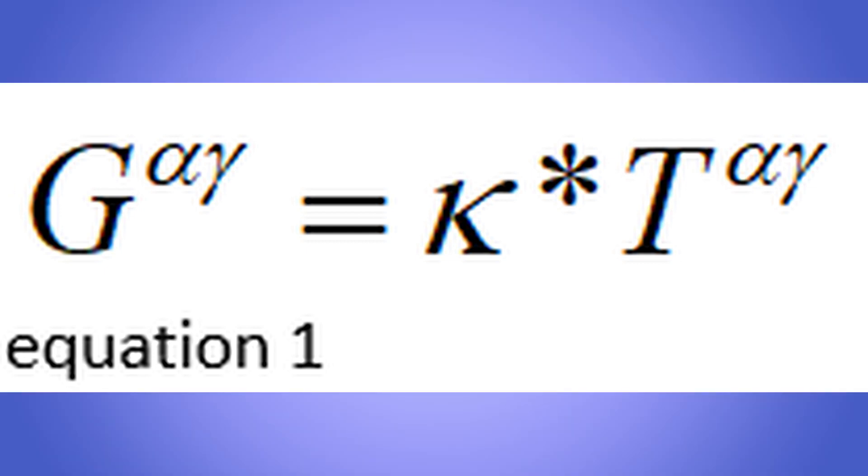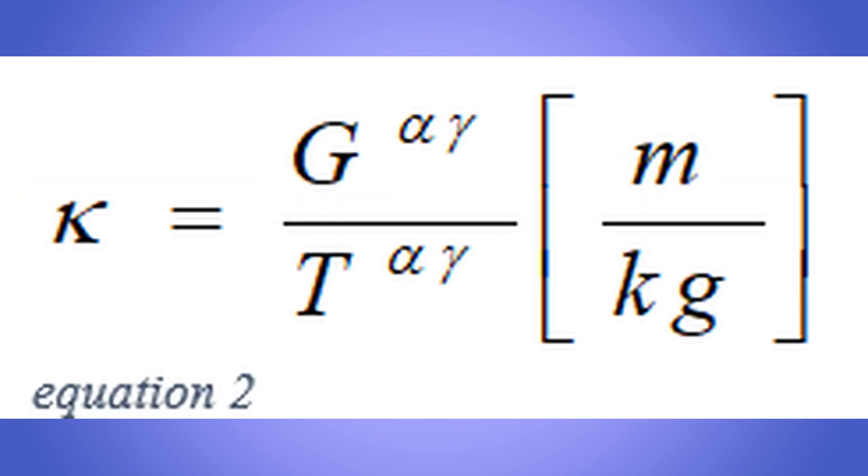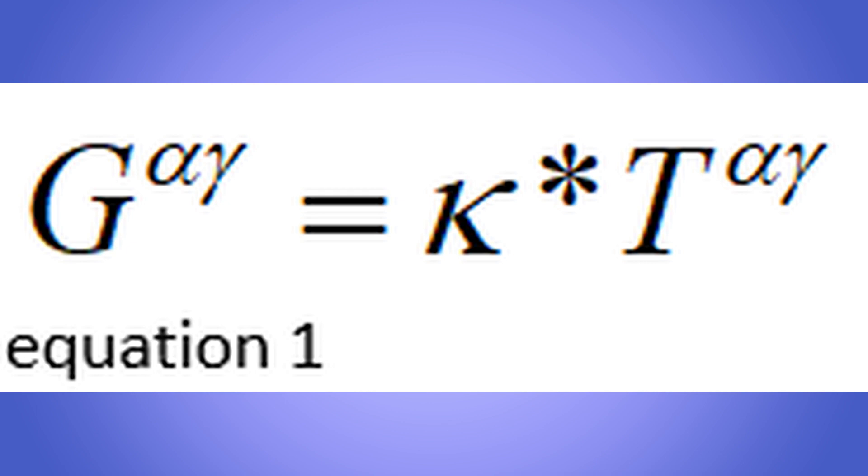The Einstein field equation tells us, equation 1. Rearranged, we find the proportionality factor kappa, equation 2. The Einstein field equation tells us too what exactly kappa means.